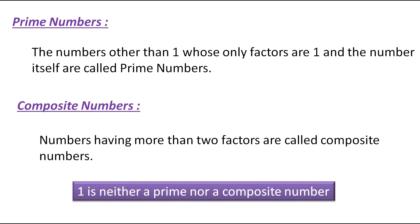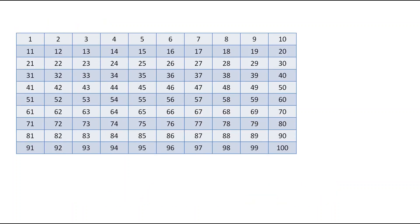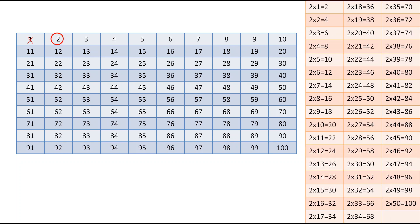Now you might be wondering how to find prime numbers and composite numbers. There is one method. I have taken the numbers 1 to 100 and we have to find which numbers are prime. First, we scratch out 1, as it is neither prime nor composite. Since 2 is a prime number, we will encircle it, and now we will take the table of 2 up to 100 and scratch out all multiples of 2.